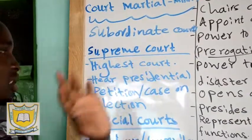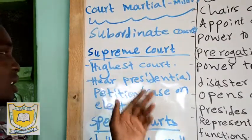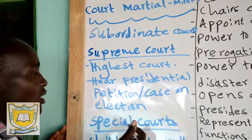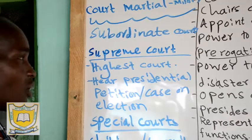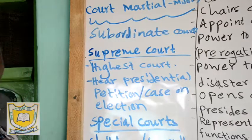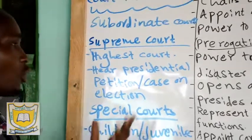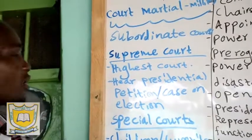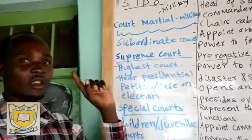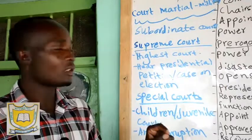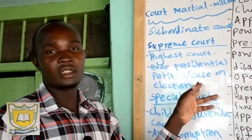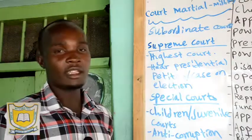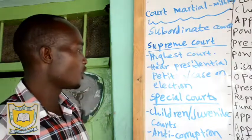The Supreme Court is the highest court in Kenya. The Supreme Court also handles the presidential petition or cases in elections. Like in 2017, you saw what happened between Mr. Raila and Honorable Uhuru Kenyatta — they forwarded the case to the Supreme Court. The only court that has power to hear a presidential petition case relating to an election is the Supreme Court, led by the chief justice.